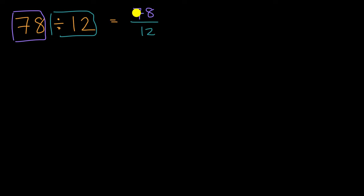Well, let's think about it. Is there a multiple of 12 that's near 78 without going above it? Well, we know that 12 times 5 is 60, 12 times 6 is 72, 12 times 7 is 84, so 12 times 7 is too high.